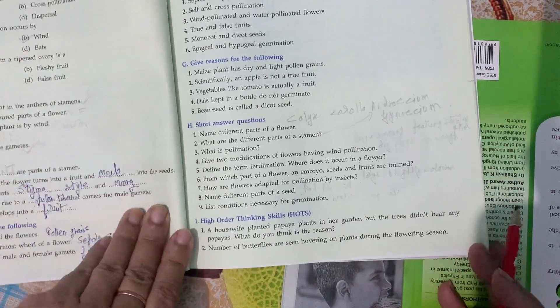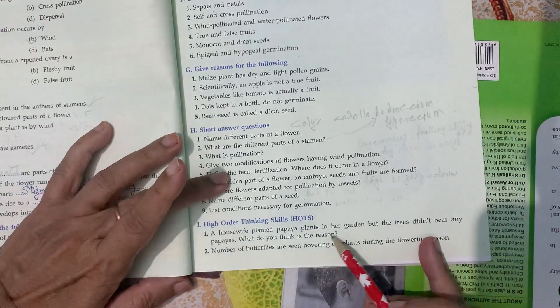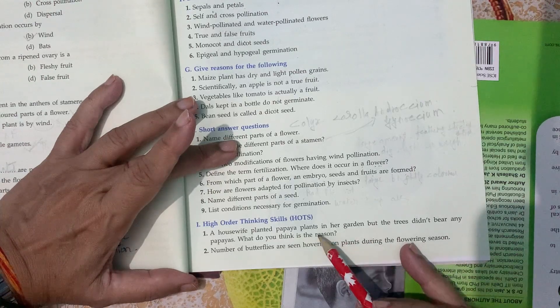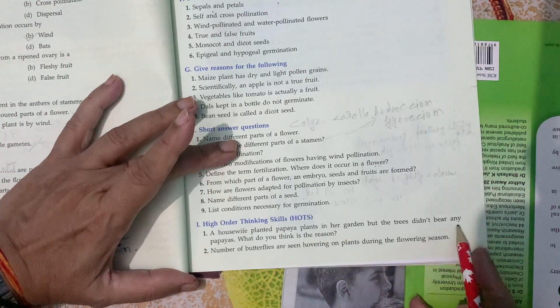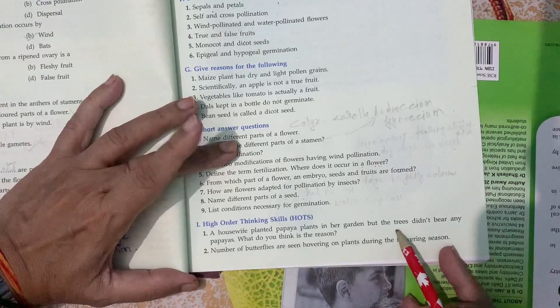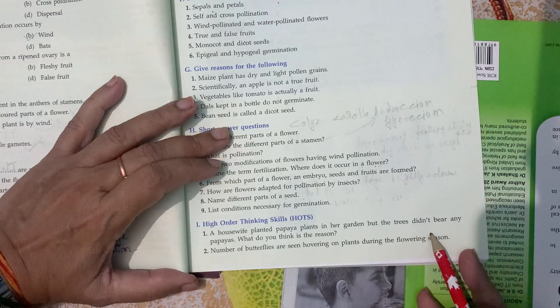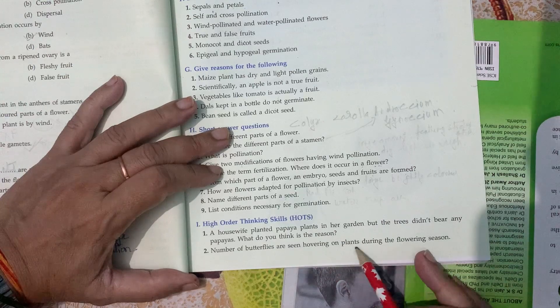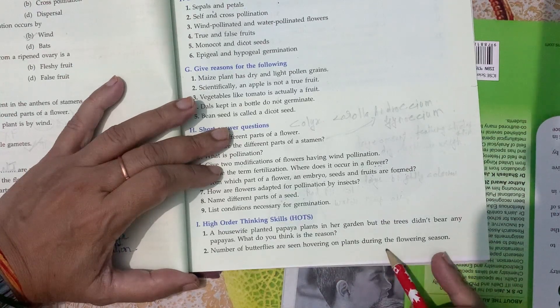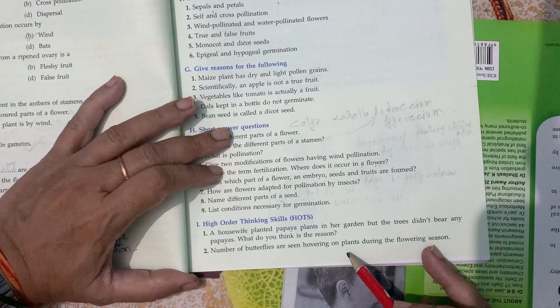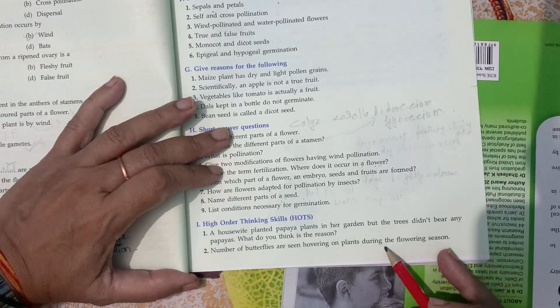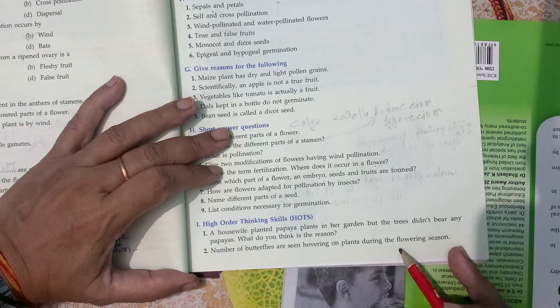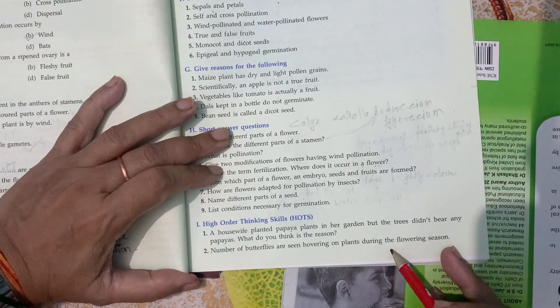High order thinking skills. A housewife planted papaya plant in her garden but the trees didn't bear any papaya. What is the reason? It is the male plant. In papaya, male and female plants are different, so it's not bearing fruit. Butterflies are seen hovering on plants during flowering season. The flowers are insect pollinated. Pollen of such flowers acts as food for insects and they help in pollination.